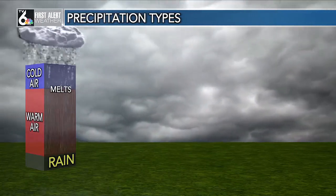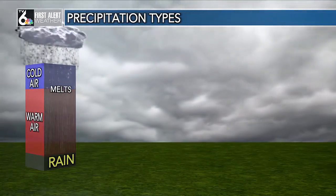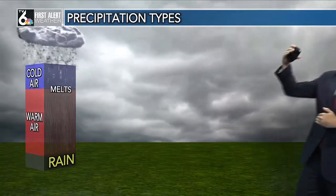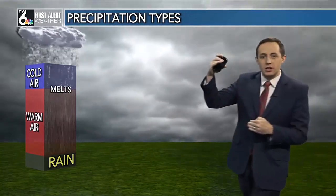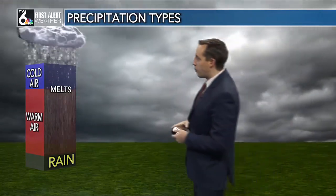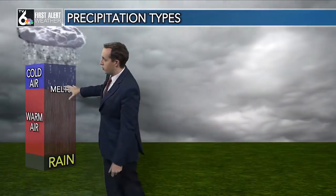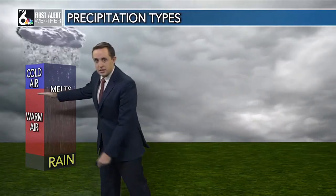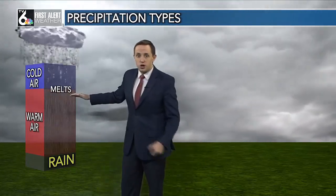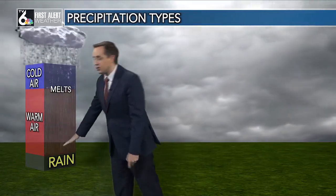Basically, that's just when precipitation starts to form. And because it's so cold as you go up in the upper levels of the atmosphere, all precipitation starts out as snow. So it falls through the cold air. Then once we get to that warmer air — we're talking above 32 degrees — above freezing, it melts and stays as rain.